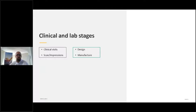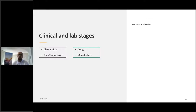Let's start with clinical and lab stages. We have the clinical visits where you do your scans, impressions, and try-ins. We have the lab side where information comes in for designing and manufacturing. Everything with a purple outline is a clinical site; everything with a green outline is the laboratory site. I'll go through them step by step — they all merge together nicely.